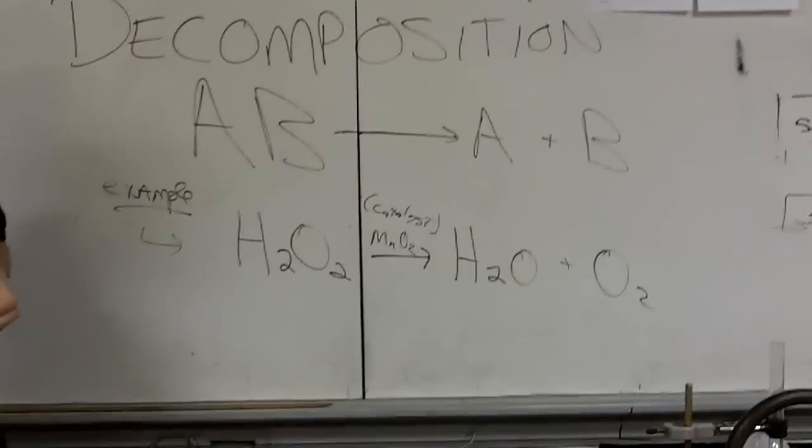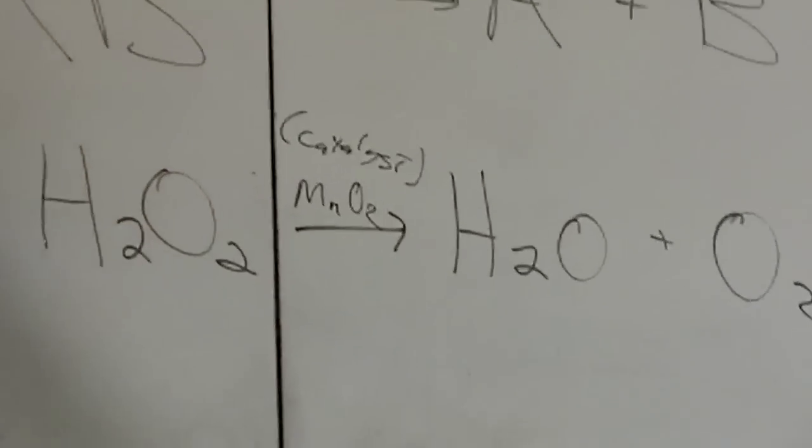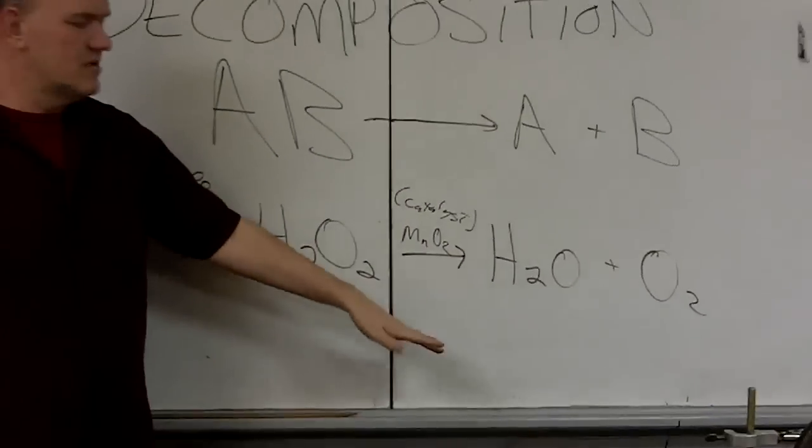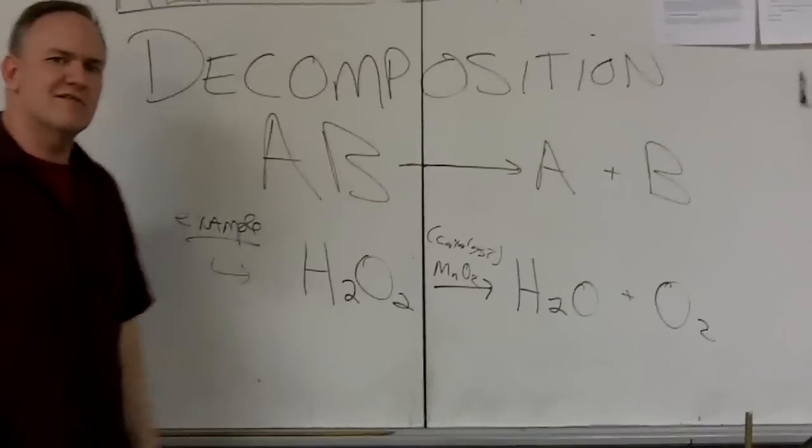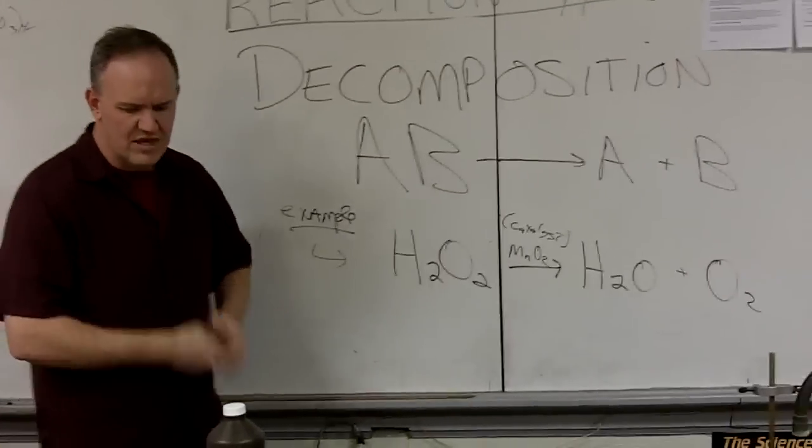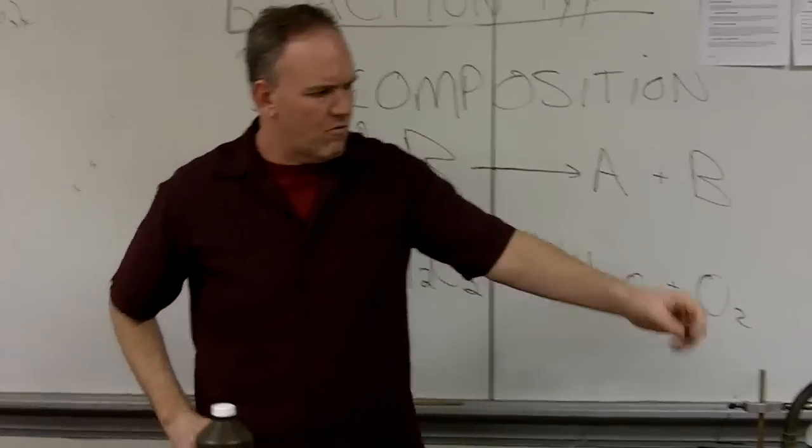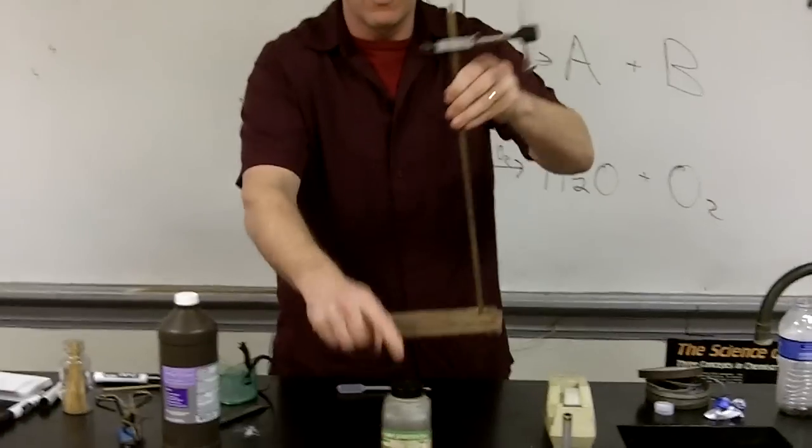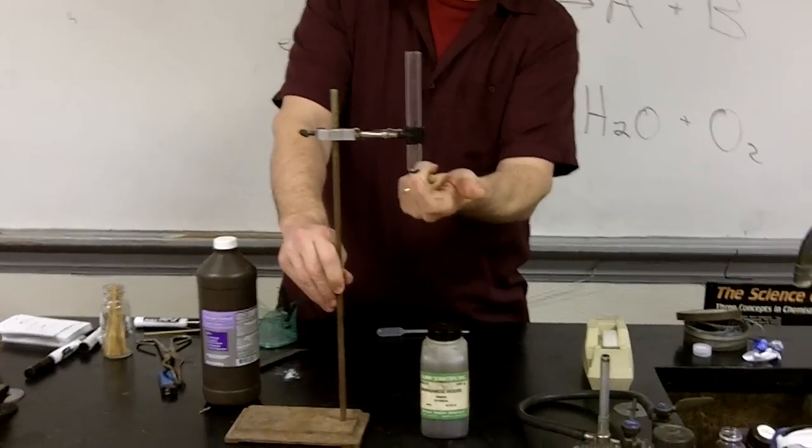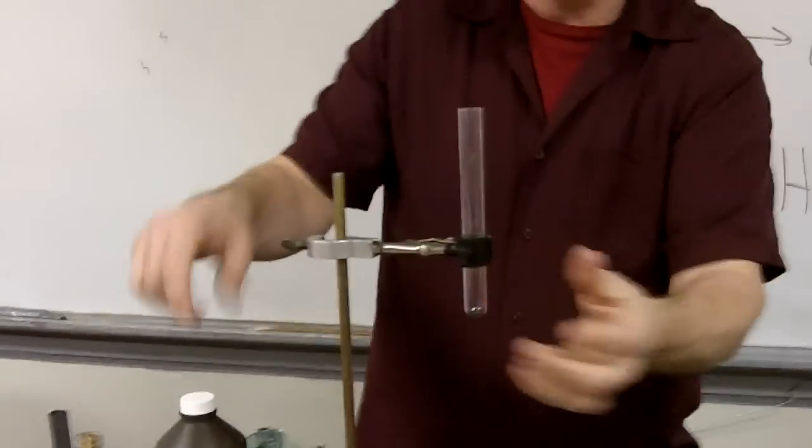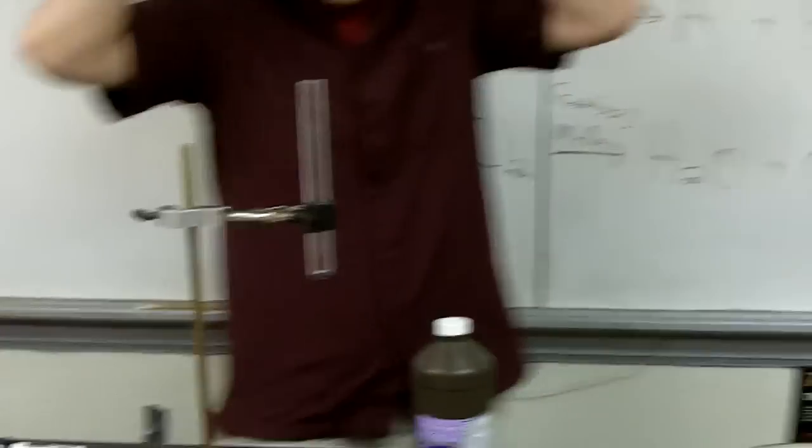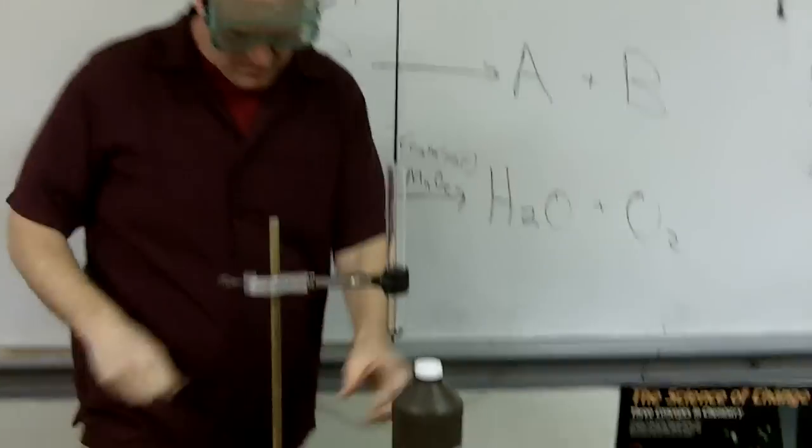It's not actually going to get used up in the reaction. All the manganese dioxide I put in at the beginning will still be there at the end. Not all decomposition reactions use catalysts, but this one does. So here I have already put some of the manganese dioxide, the black powder, inside of this test tube here. I'm going to take my hydrogen peroxide and I'm going to put a little bit in, and you should immediately begin to see some oxygen being generated.